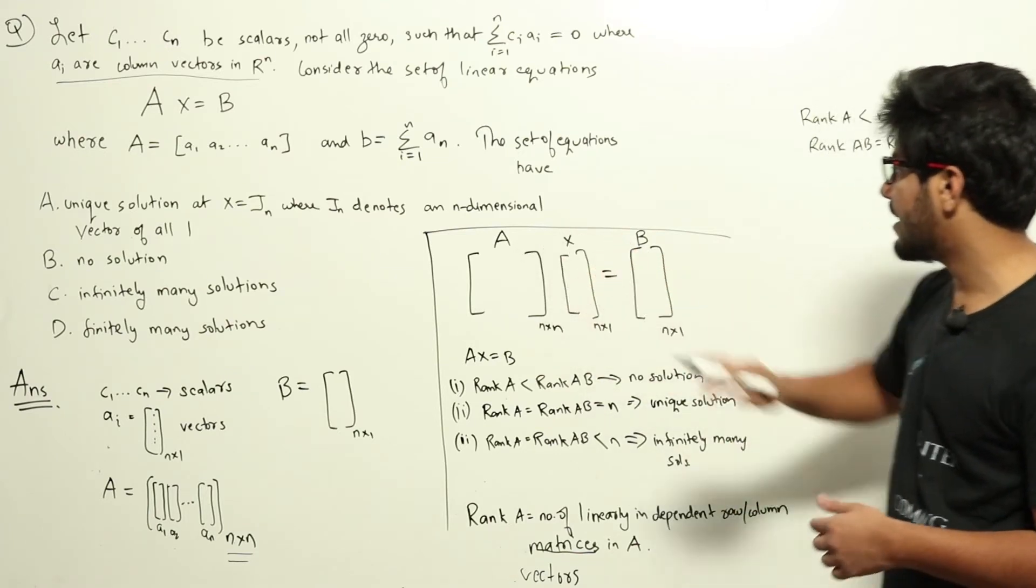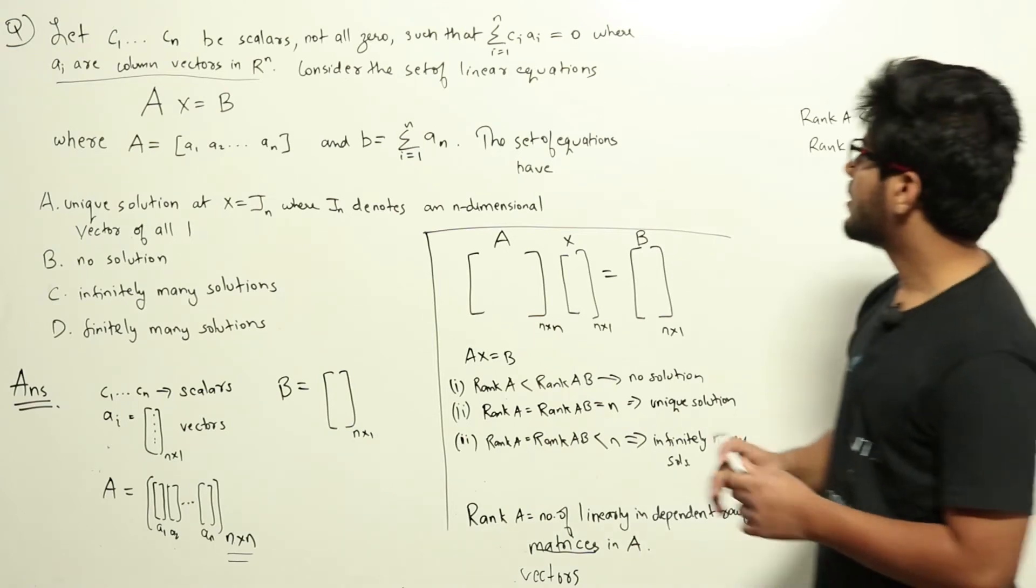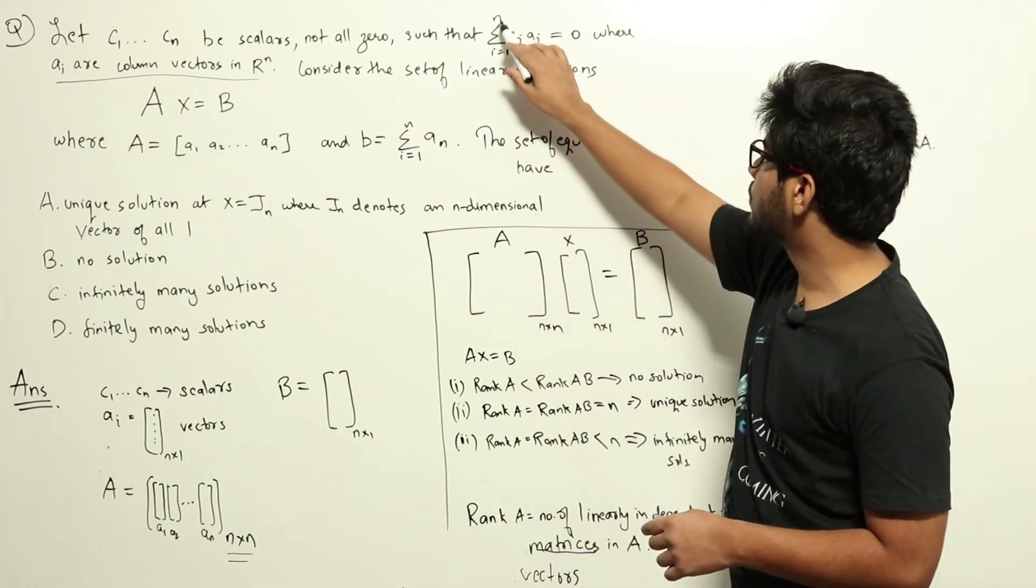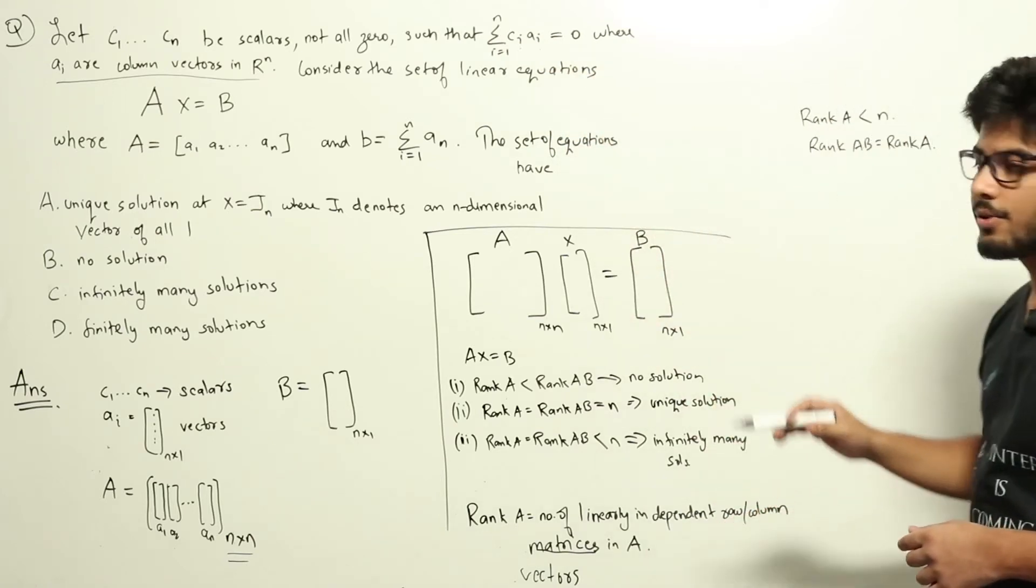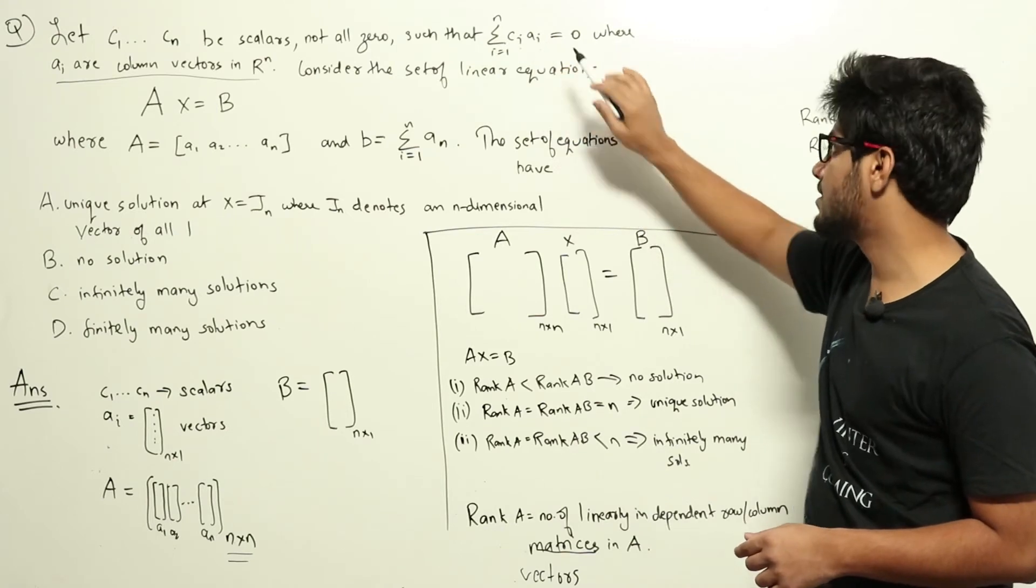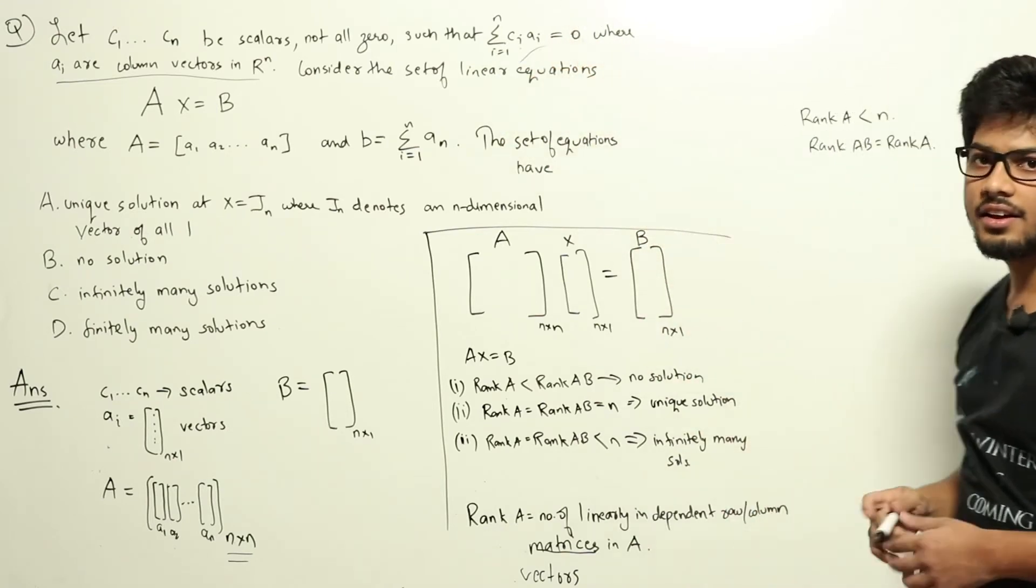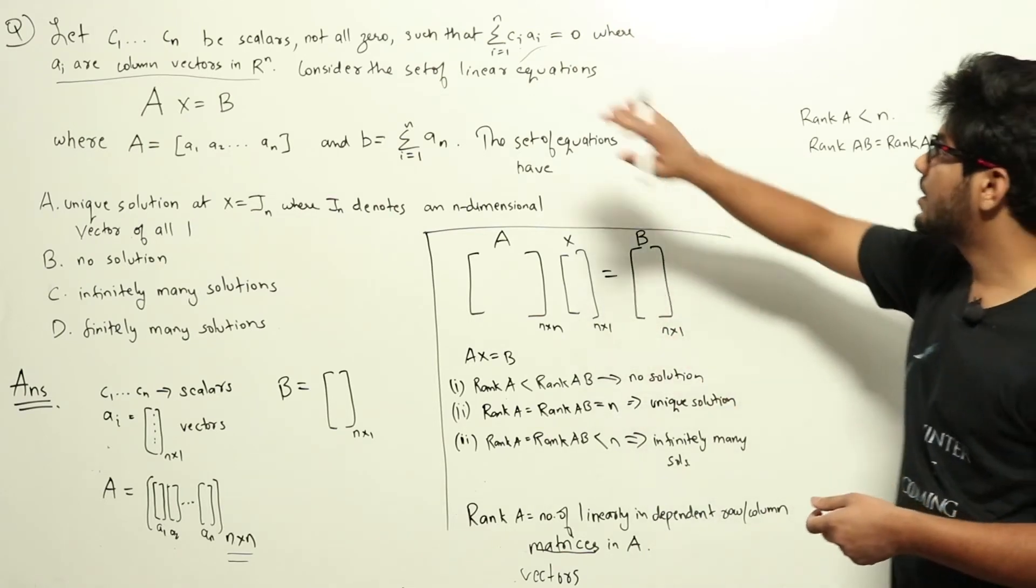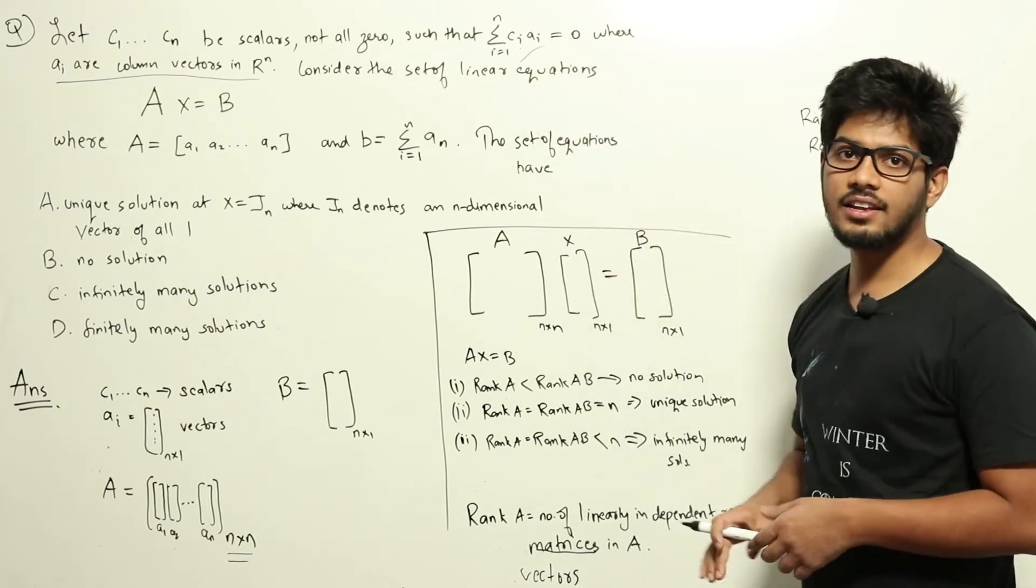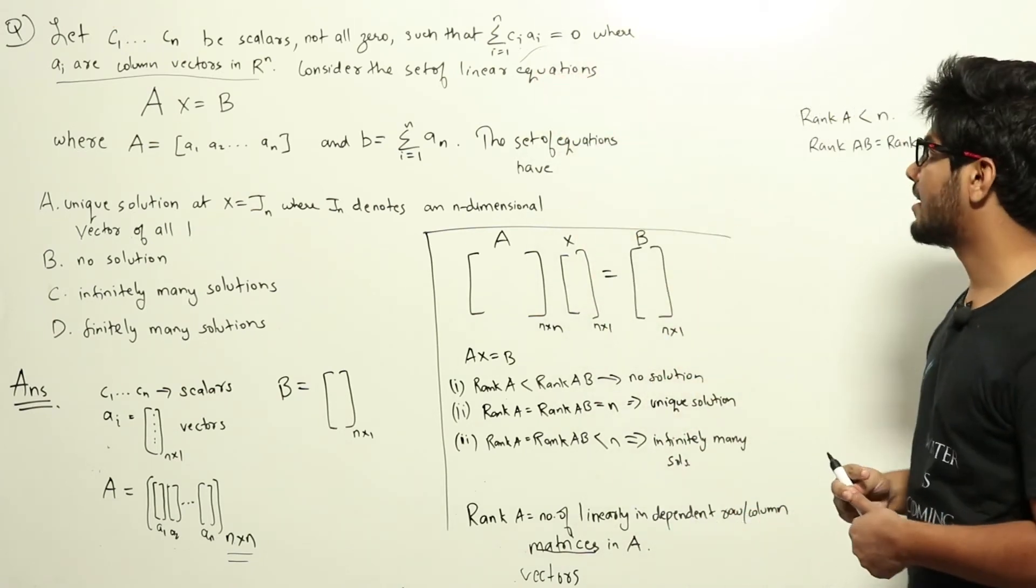Based on this understanding, we will solve the question. Let us look at matrix A. It has n vectors, but it is given that sigma i equal to 1 to n, ci ai equal to 0. So some linear combination of all these ai vectors will give 0, which means the set of all of these are linearly dependent, which means we don't have n linearly independent vectors in A1, A2, A3, up to An.